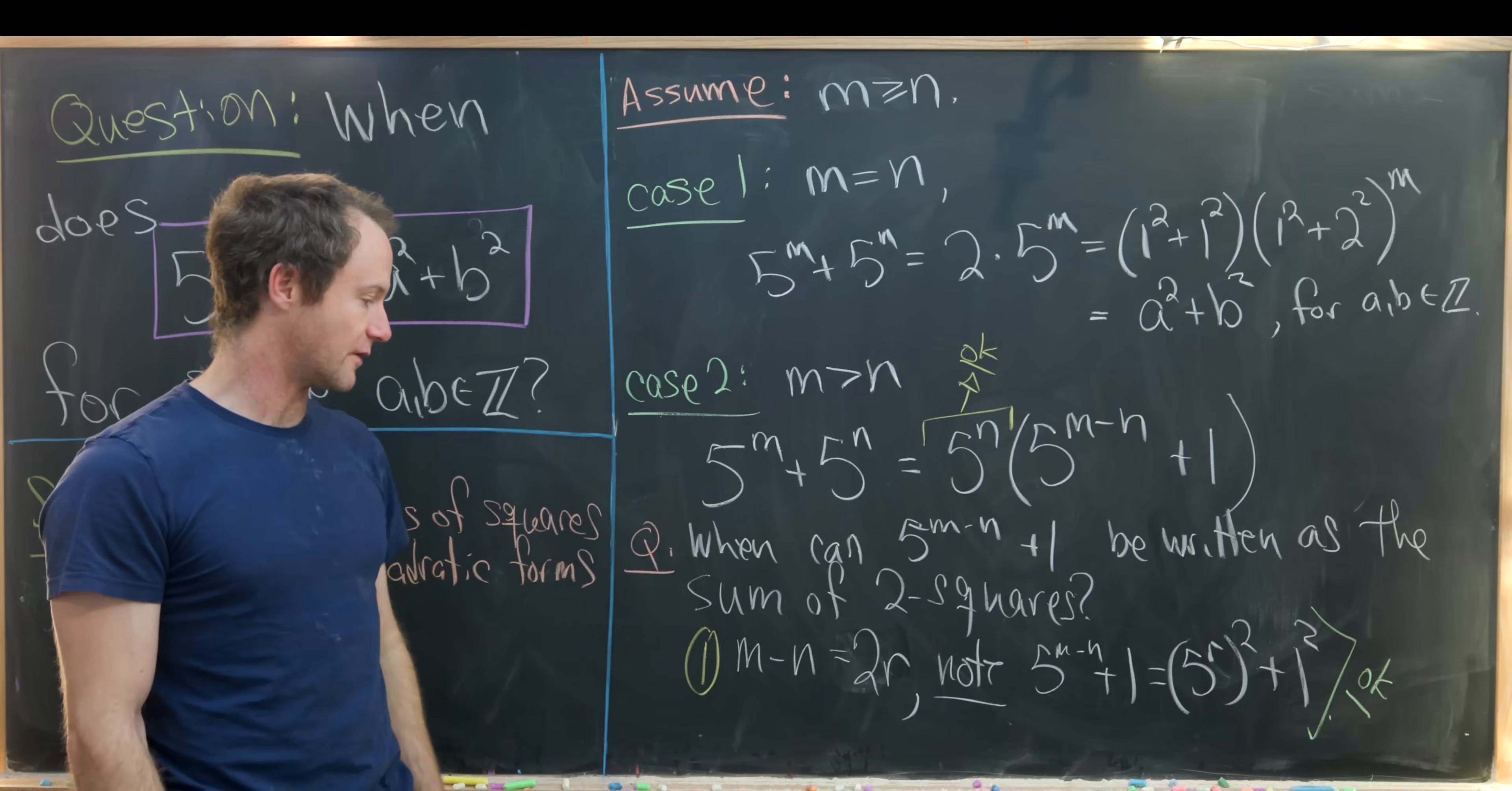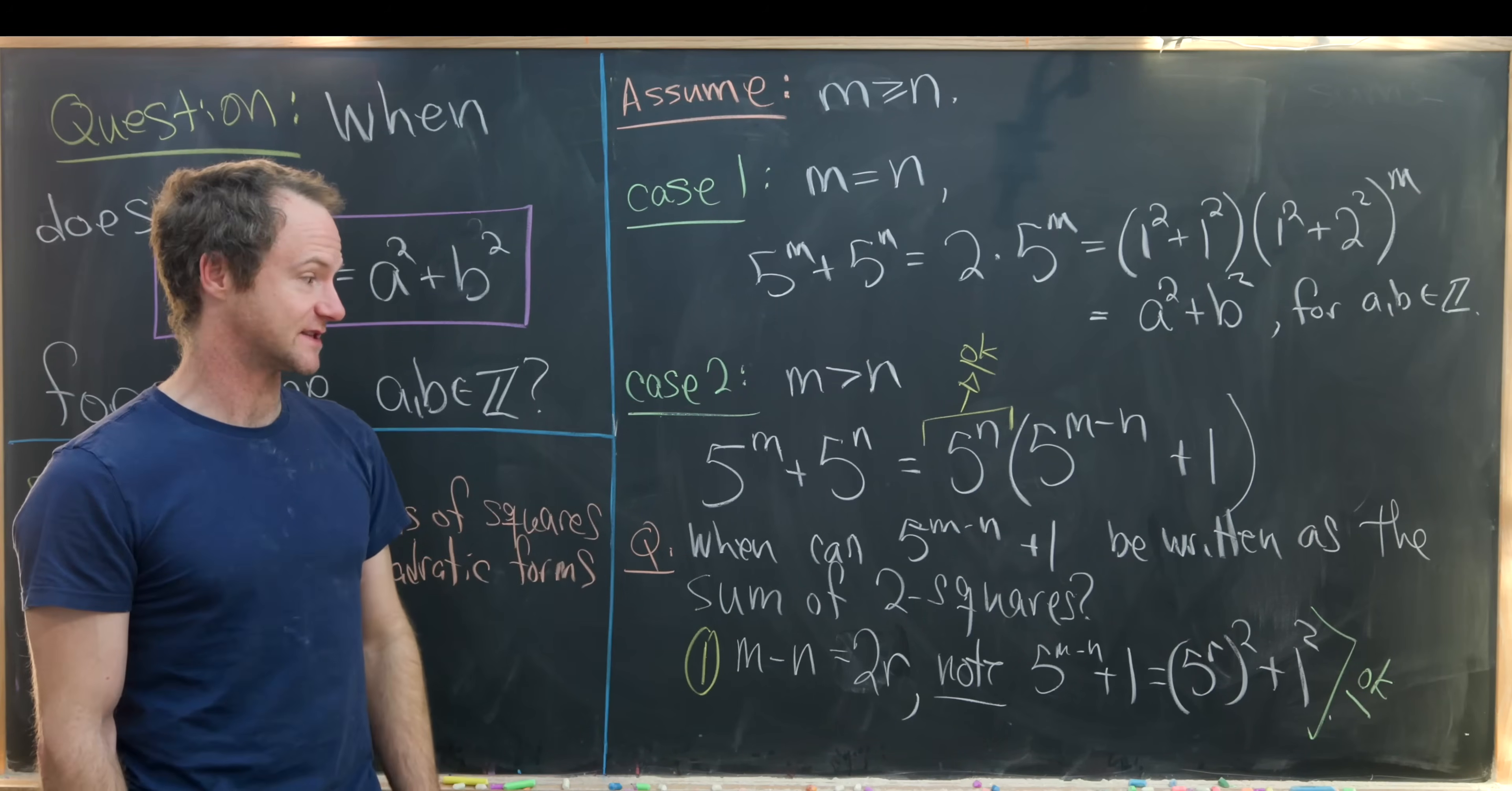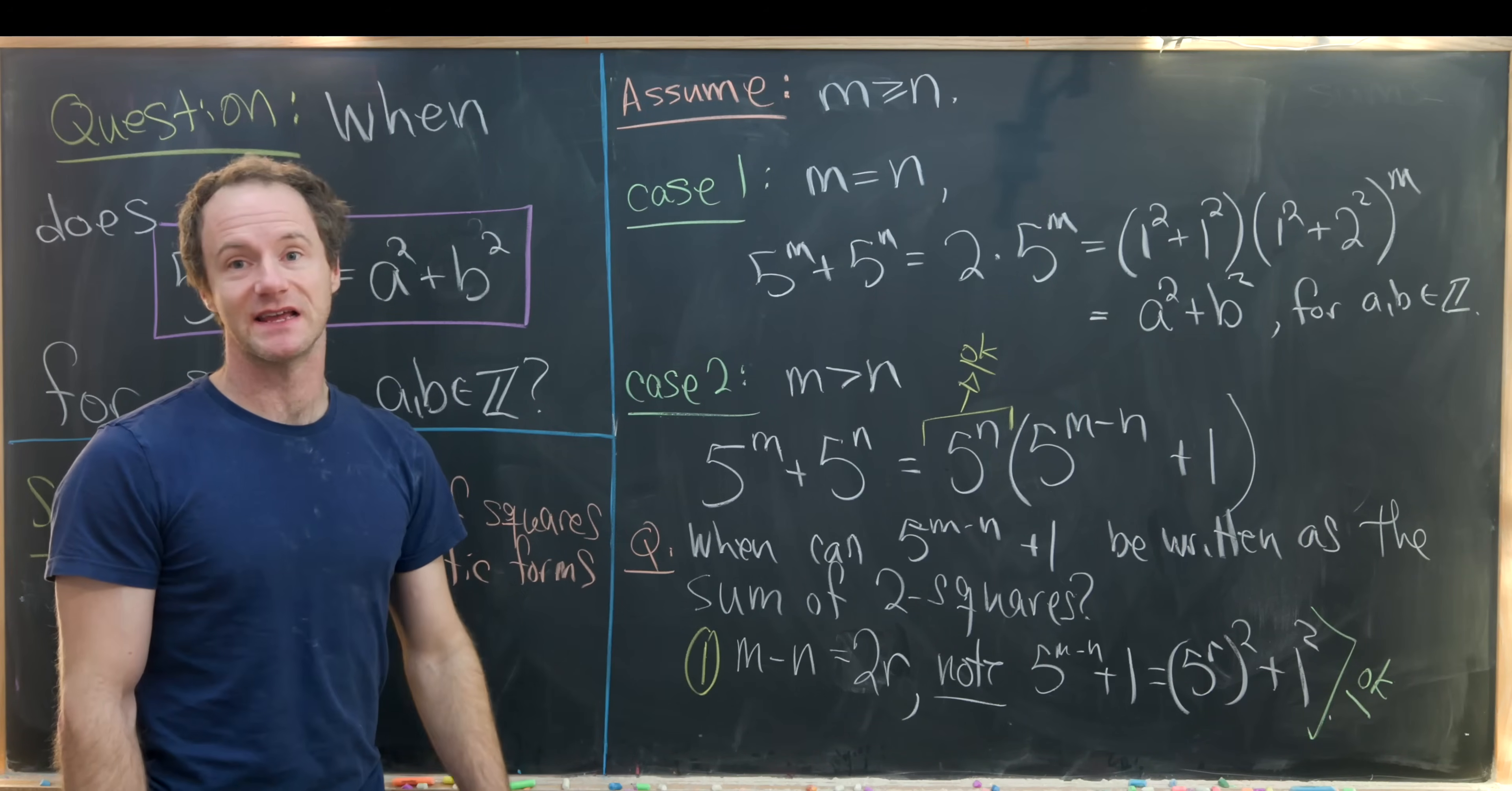So just to reiterate what we have: if m minus n is even, and that actually includes the case when m equals n as well, then 5 to the m plus 5 to the n can be written as the sum of two squares. And that's because 5 to the n always can and then this is already the sum of two squares.